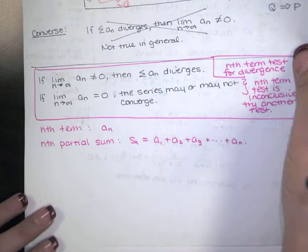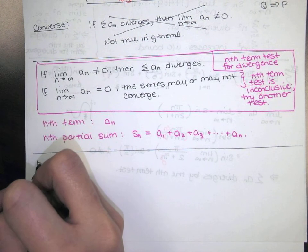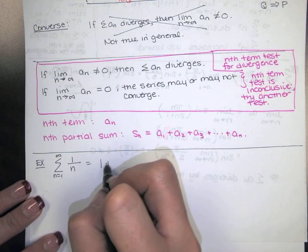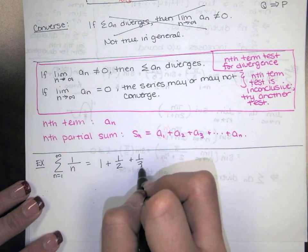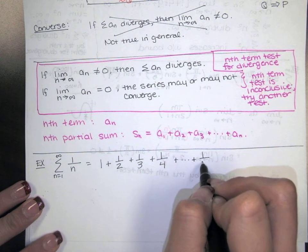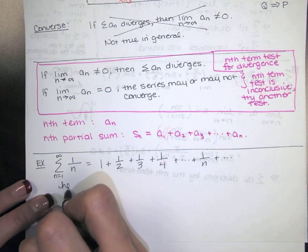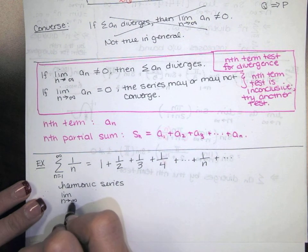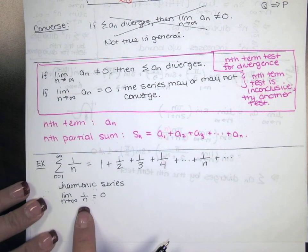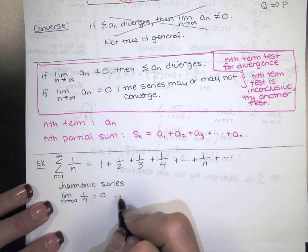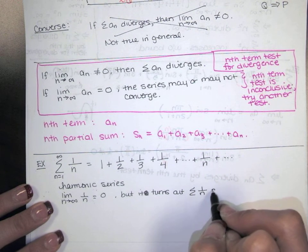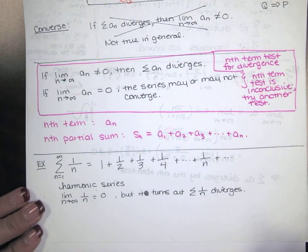I want to show you a couple of series where the nth term test is inconclusive. Here's one — this is called the harmonic series. When n equals 1 we get 1, when n equals 2 we get 1 half, when n equals 3 we get 1 third, when n equals 4 we get 1 fourth. The nth term is 1 over n. Notice that the limit of the nth term is 0, because as n goes to infinity, 1 over something really large is something really small. But it turns out, as we'll see in the next section, the series diverges. So the nth term limit was 0, and yet the series diverges.